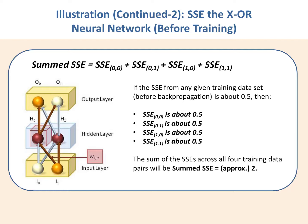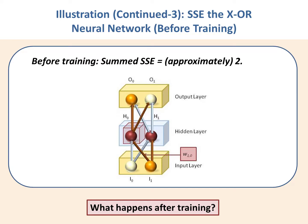Let's sum up what we've figured out so far. The sum squared error depends on the number of output nodes — before training it will be approximately the number of output nodes times 0.25, yielding a typical output of about 0.5 per node. If your stopping criterion is based on the sum of SSEs across all classes of training data, that total could be something like 2.0.